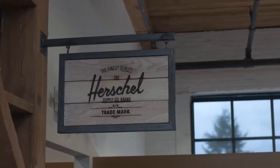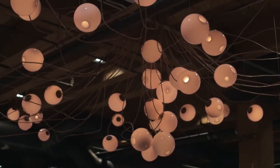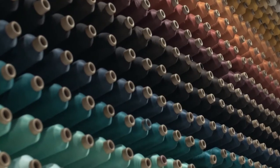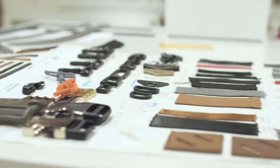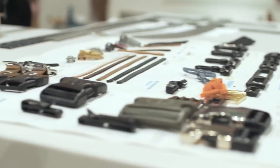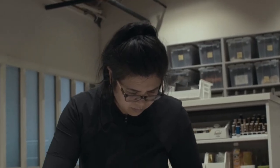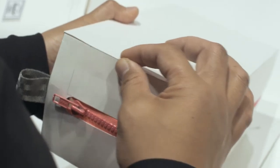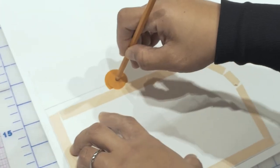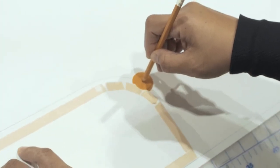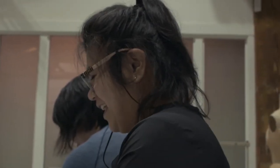My process at Herschel includes working closely with the design team. They'll come to me with a sketch or a spec drawing for a new bag, and then I'll make a paper model out of it. That allows us to do a quick exploration of the shape and make quick changes to dimension. Then from there, if we're happy, I'll pattern it and make it out of fabric.